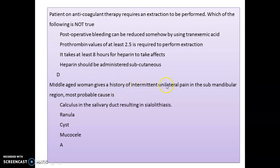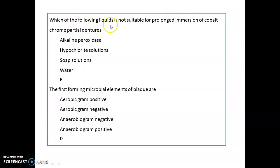If a middle-aged woman gives a history of intermittent unilateral pain in the submandibular region, the most probable cause is a calculus in the salivary duct, resulting in sialolithiasis. Which of the following liquids is not suitable for prolonged immersion of cobalt-chrome partial dentures? That is your hypochlorite solution. The first-forming microbial elements of plaque are anaerobic gram-positive organisms.